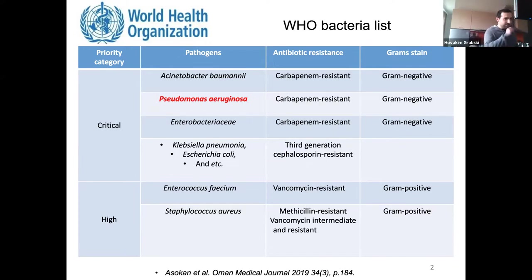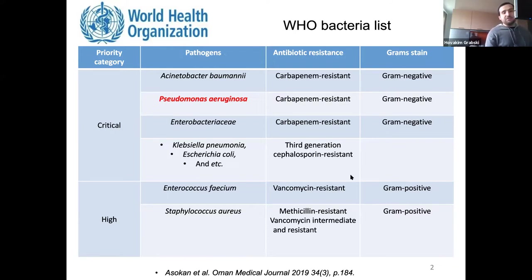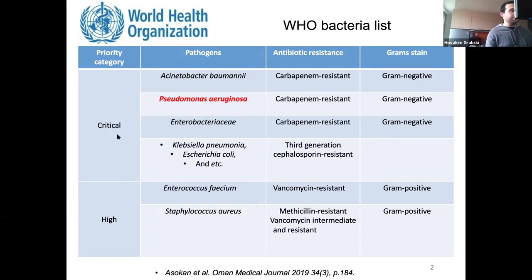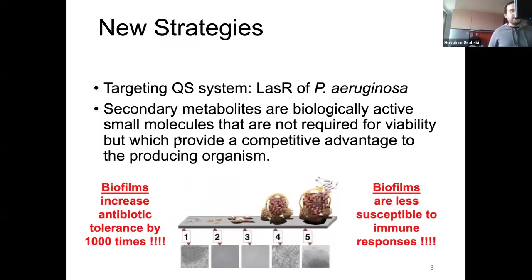As you can see on this slide, the World Health Organization announced the list of the most dangerous superbugs. Among them, Pseudomonas aeruginosa is listed, and it belongs to the critical priority category. Antibiotics are not effective against it anymore.